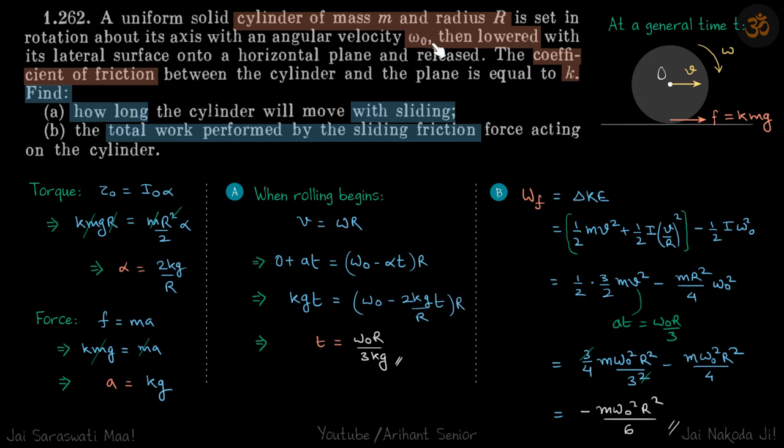Once again, we have a cylinder that's rotating with omega naught and that's just kept on the floor. As a result, friction will act forward. That will reduce omega and that will increase v until v becomes omega r. We need to find how long that will take and what is the work done by the friction.